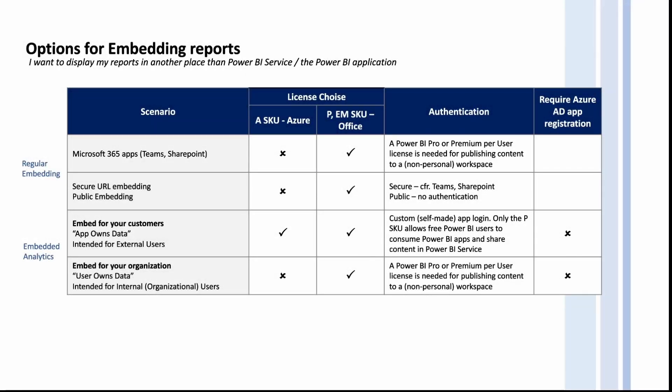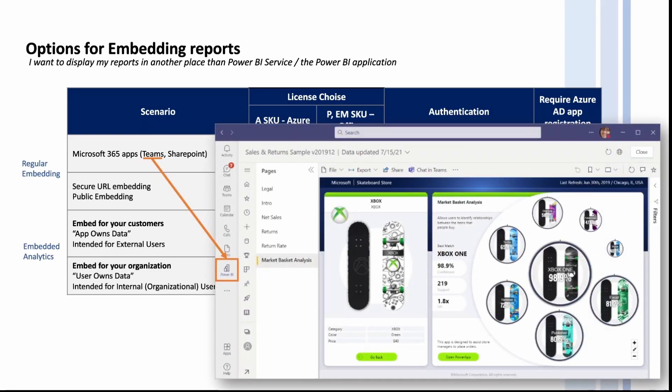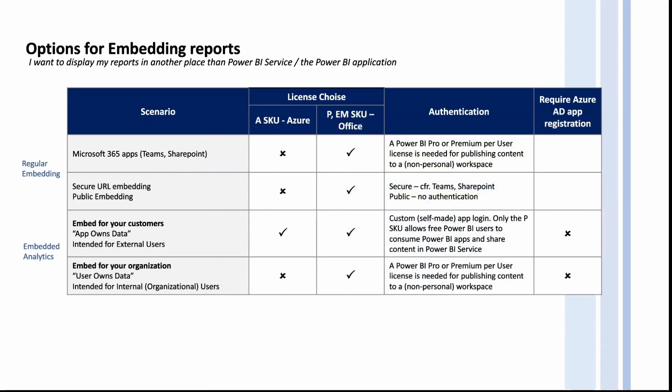What if you want to display your report somewhere other than the Power BI service or app? You can embed reports in Teams or SharePoint, publish them to the web, or embed them in your custom application. The setup is done in Office and you can opt for a per-user plan or a capacity-based plan, as shown in the table. We want to highlight again that publish to web should only be done with data that isn't confidential.